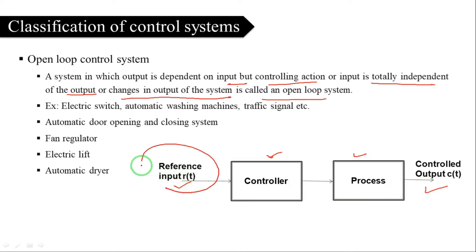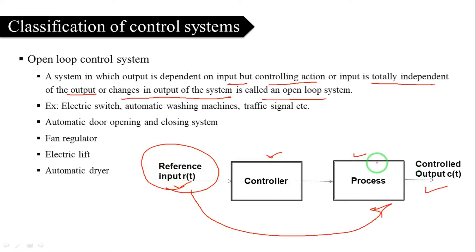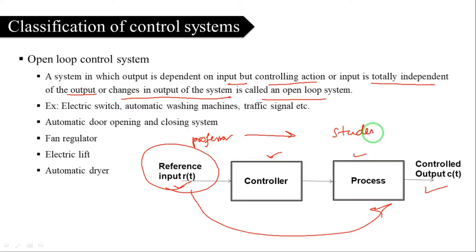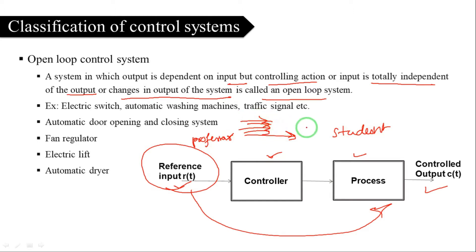If there is any change in the output, then there is no change in the input — the input and output are not related. For example, from the previous lecture: a professor is delivering a lecture to students.